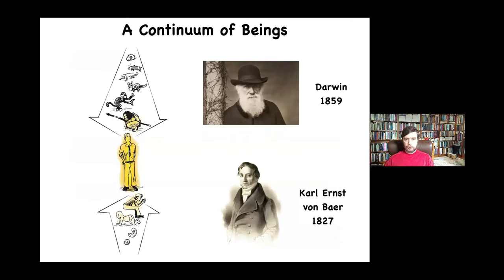But we now know, both on the evolutionary timescale and the developmental timescale, that actually there are no discrete natural kinds here, in the sense that all of this is a very smooth, gradual continuum. We stand at one particular point of a very long set of very smooth, gradual changes that eventually make significant alterations to our capabilities. But you have to understand the whole continuum to understand what this thing is capable of.